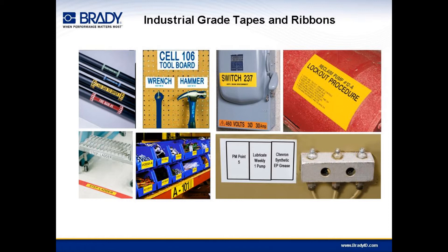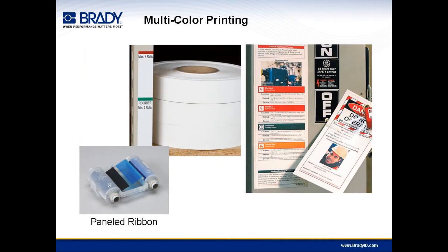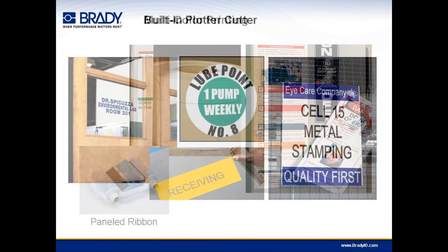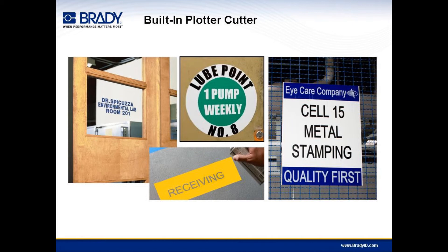As a result, GlobalMark labels withstand moisture, common cleansers, and solvents, and can even last up to five years outdoors. The GlobalMark can print multiple colors on a label and can even print photographs, which is highly useful for procedure placards or safety tags. The system accommodates paneled ribbons where multiple color panels are included on the same ribbon, allowing the unit to print multiple colors without having to manually change ribbon cartridges. The GlobalMark can also be purchased with a built-in plotter cutter, which can cut out shapes and characters — so when creating a round gauge label, there's no need to manually cut around the circle with scissors. It's all done automatically.